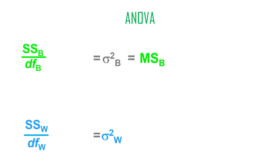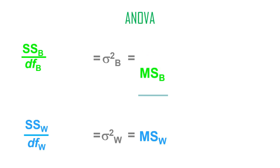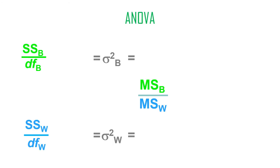We call those variances 'mean square' in ANOVA — I don't know why, it's just leftover old terminology from the 1910s or 1920s that nobody's ever changed. It's just variance: the variance estimate for between — the variance between the means — or the variance estimate within the groups. You divide one of those things by the other, and the result we call F.